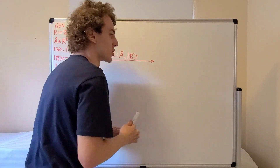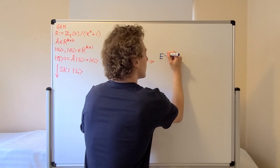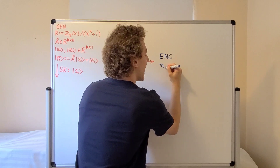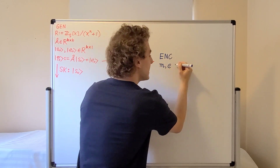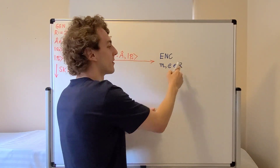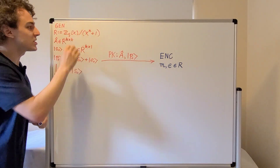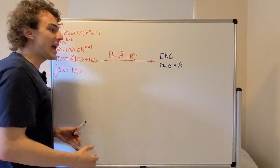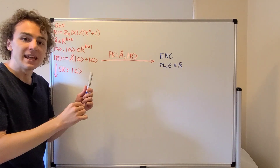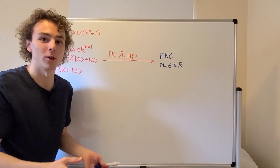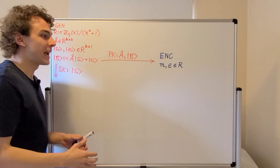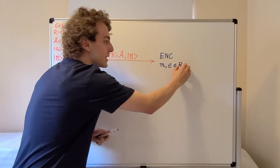The encryption procedure is going to involve a message M and an error E. Both of these are elements of the ring. This is a polynomial ring, so the elements of this ring are polynomials and they have coefficients. If we have an n-bit message, we can encode that as a polynomial by setting the coefficients to 0 or 1, which allows us to encode an arbitrary n-bit string as one of these elements of the ring.